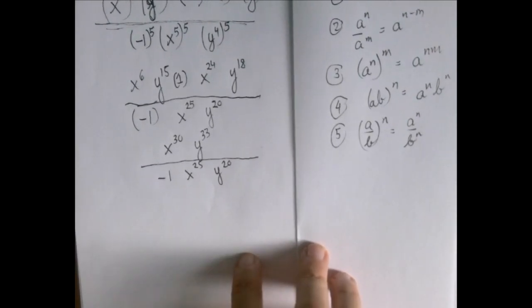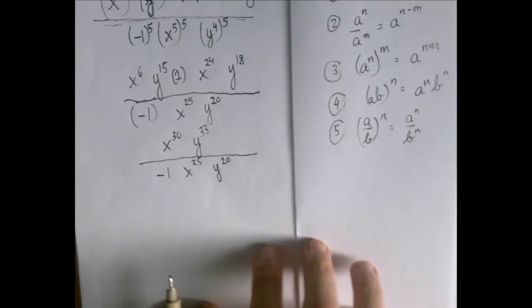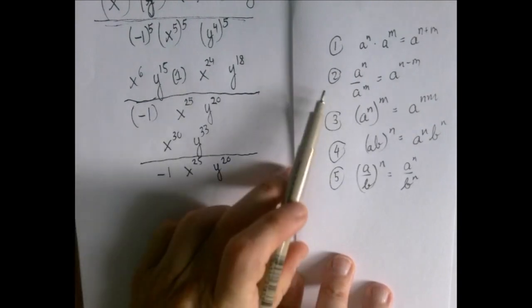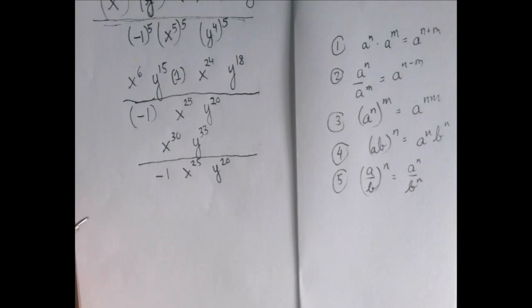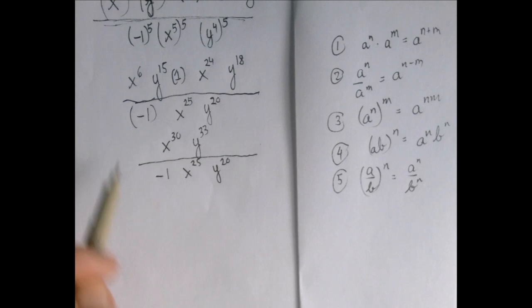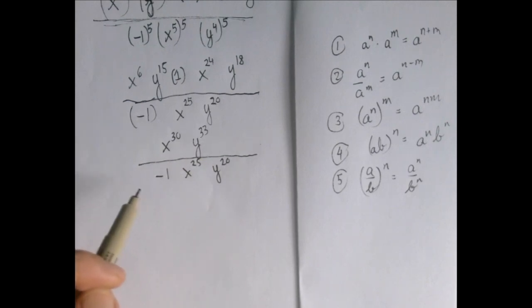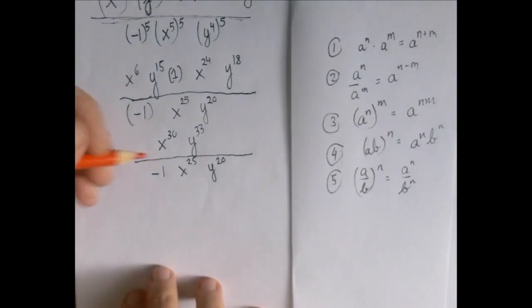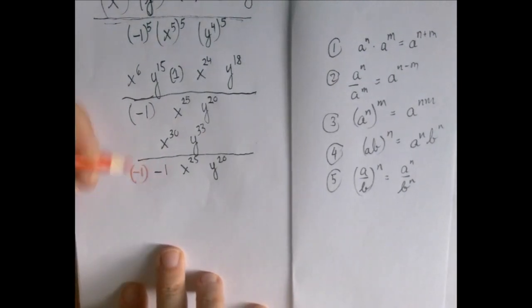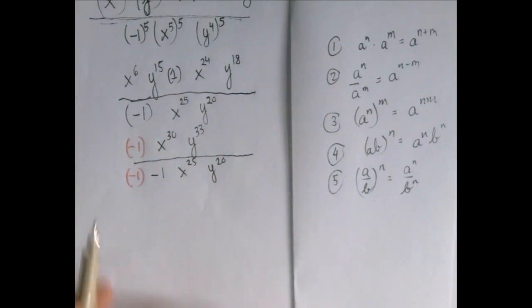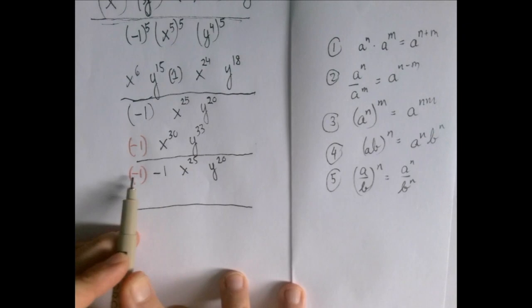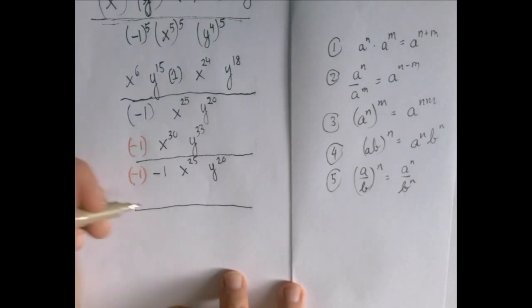We're still not simplified — X appears twice and Y appears twice. So now we use the second rule, which says if we're dividing with the same base we can subtract the exponents. Also, let's get rid of the negative sign in the denominator — a negative sign freely moves within the fraction and we should never leave it in the denominator. To remove it, we multiply both numerator and denominator by negative one, so the denominator gets a coefficient of plus one and the numerator becomes negative one.